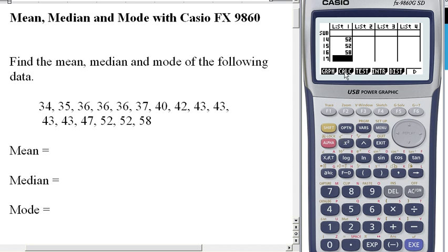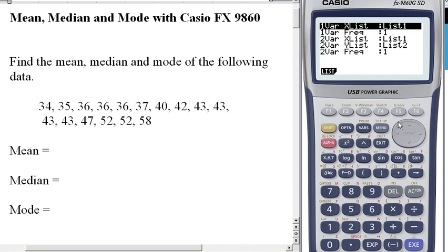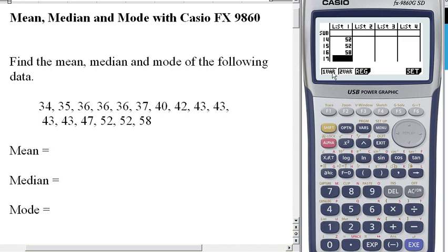Now I want to calculate the statistics. Where it says Calc, you click on F2. I'm just going to set it up. So here, Set. All my data, my X list, is in list one. Each number I've typed once for every time it occurs, so its frequency is one. Okay, exit. One variable statistics is what we want. We only have one set of numbers. So we click one variable, we click F1.